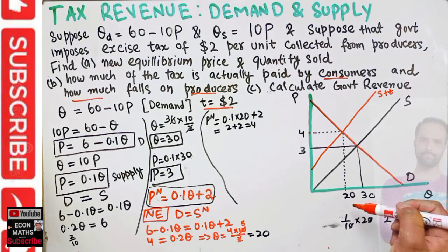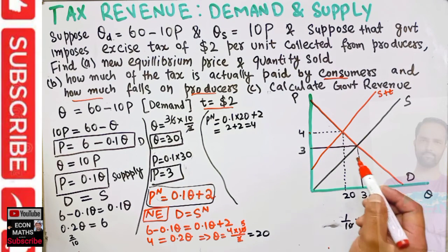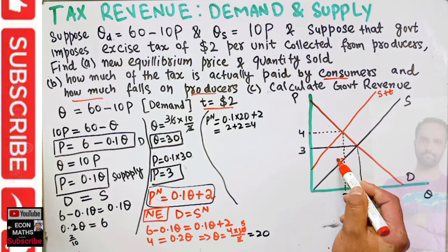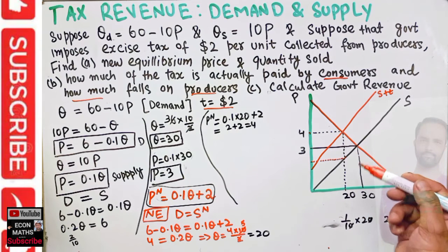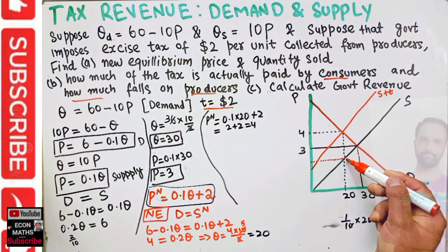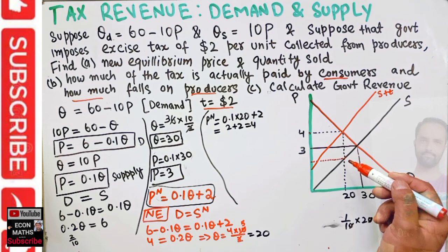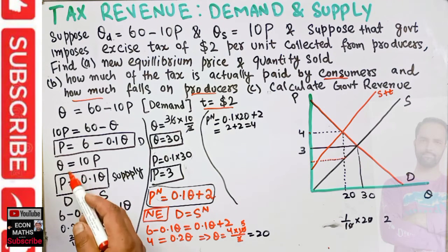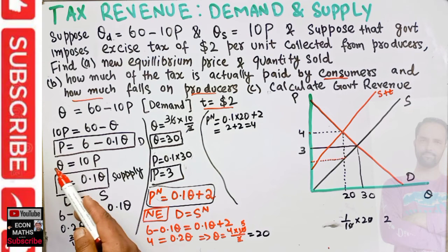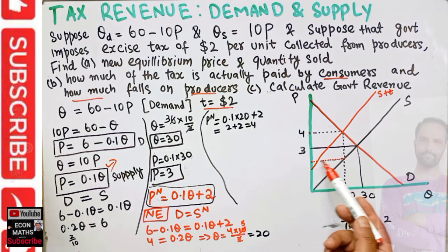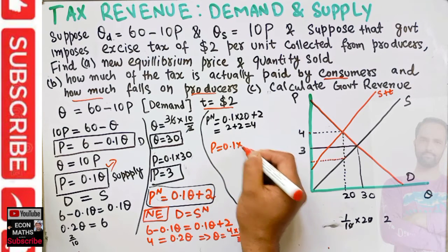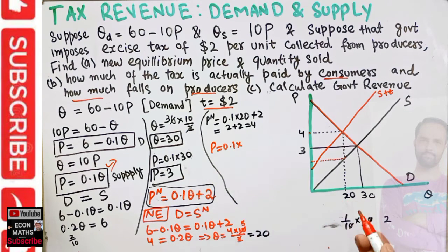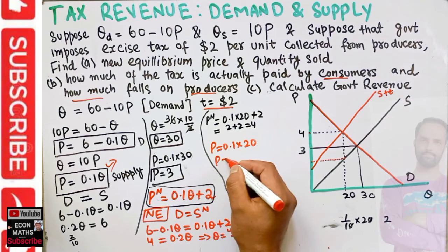When we are producing only 20 units, we need to find the price at which producers would have supplied that quantity. Plugging q equals 20 into the original supply function: p equals 0.1 times 20, which gives p equals 2.